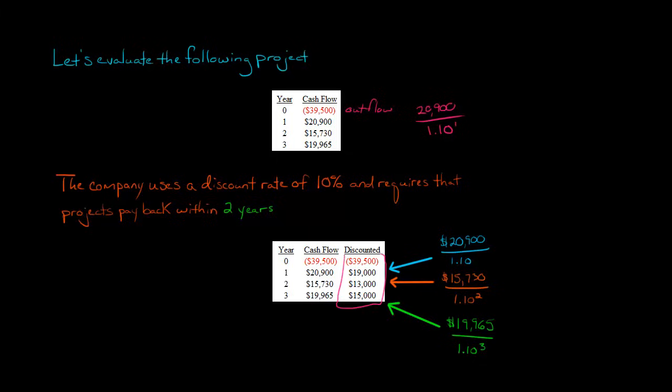So right here we have the discounted cash flows. So now let's just pretend like it's a regular payback problem where we say, okay, we have to recover $39,500. That's up front what we put up. But then year one, we recover $19,000.